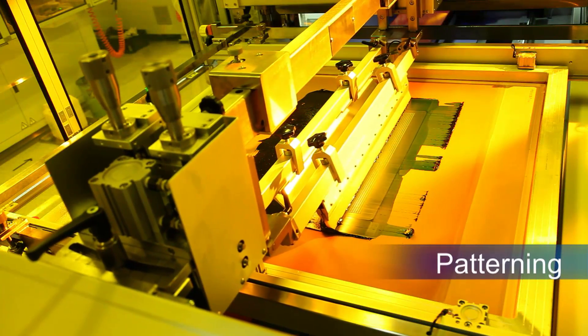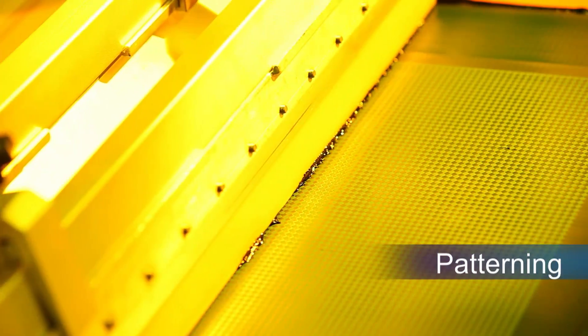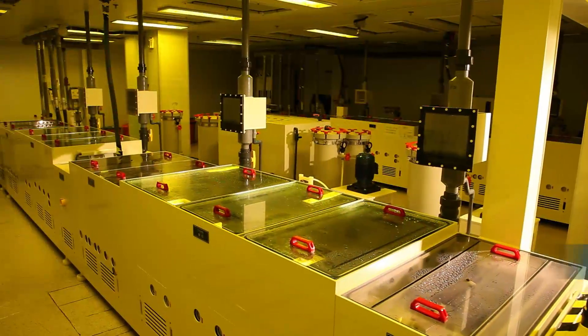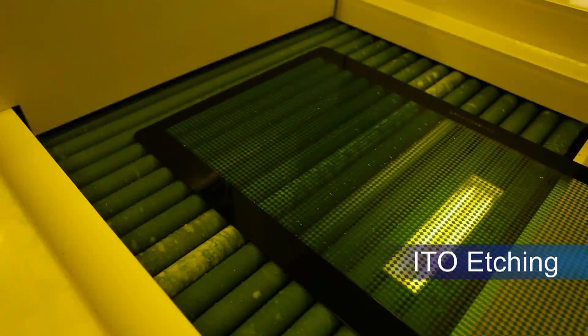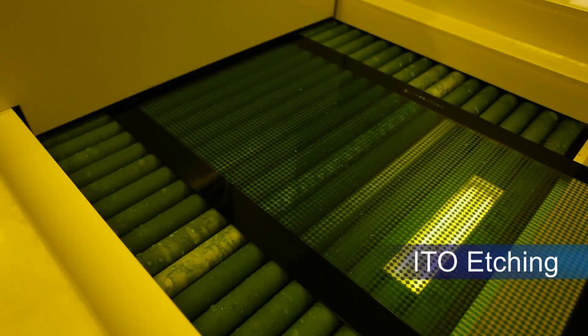Precise screen printing lays special pattern of the electrode pattern. Etching process removes unnecessary material and shapes the electrode pattern.